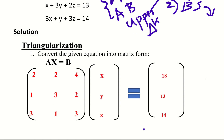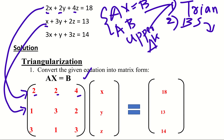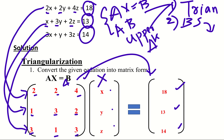The first step is triangularization. The coefficient matrix A has first row 2, 2, 4; second row 1, 3, 2; third row 3, 1, 3. The variable matrix X contains x, y, z. The right-hand side matrix B is 18, 13, 14.